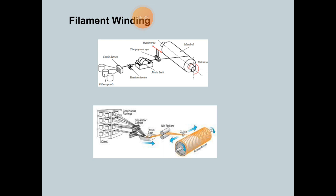In this process, fiber from continuous fiber roving gets wetted as it passes through a resin bath. The resin-wetted fiber coming out of the resin bath is wound onto the mandrel, which automatically rotates on its axis of symmetry. Care is taken to ensure sufficient tension in the fiber so that the winding remains taut on the mandrel.